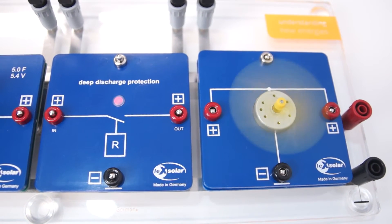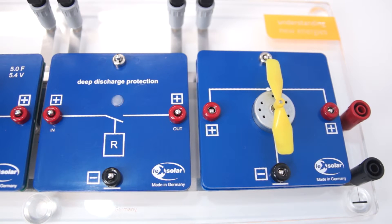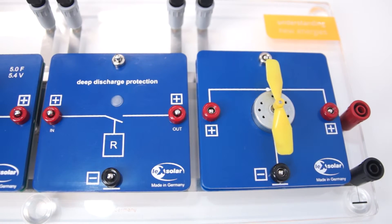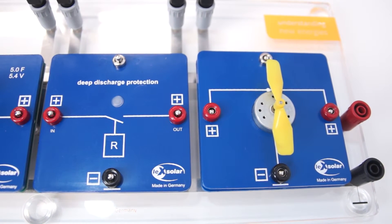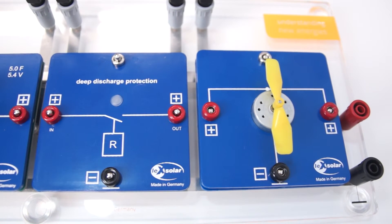Our model of an autarkic grid is now completed. In the following, we could now, for example, still measure the charge and discharge voltages or perform some scenarios.